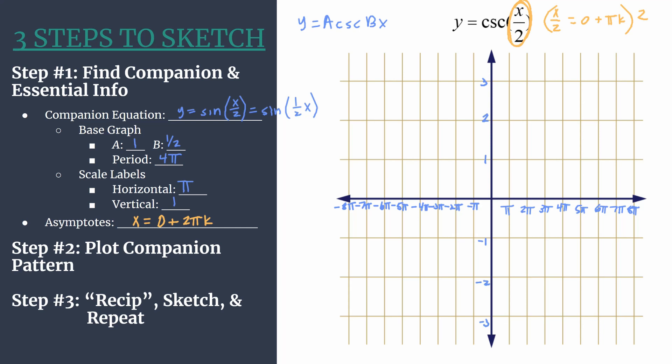All right, so now let's go into step two, where we're going to plot our companion pattern. So we're basically graphing y equals sine of x over two. Remember that the basic sine pattern is x intercept, maximum, x intercept, minimum, and it starts at the origin. Okay, so lightly graph this, we're going to use this graph as the launching point to take the reciprocal in the next step.